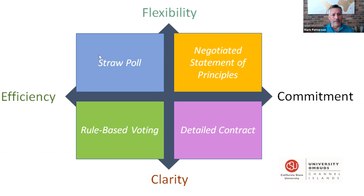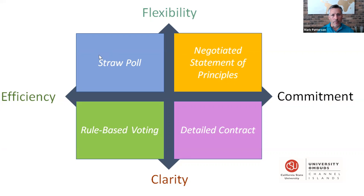In this environment, you can have flexibility, commitment, clarity, and efficiency, but not all at the same time. Thinking about which values are most important can help you choose a well-suited tool. For example, if you need to maintain a lot of flexibility over time, a contract-type agreement with a lot of clarity may not be in your best interest, but if you want people to have buy-in, something like a negotiated statement of principles is more powerful. Or if you want something quick and efficient with great clarity but don't need deep buy-in, a vote is a very effective tool. Think about the spectra of flexibility and clarity, efficiency and commitment, and choose a tool that balances them accordingly.